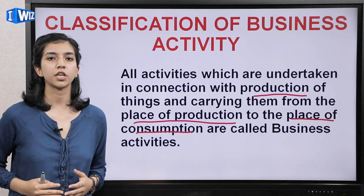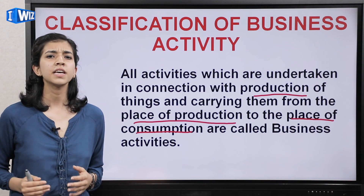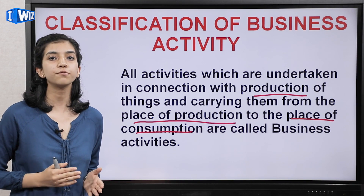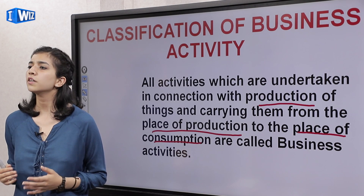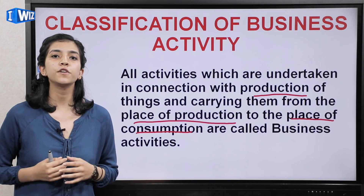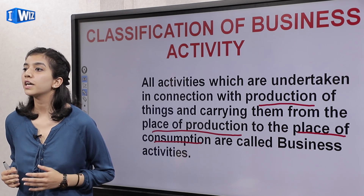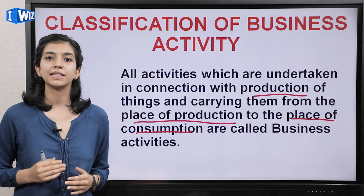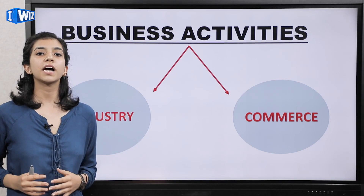The first key term is production. Production ka matlab hota hai kisi bhi raw input ko use karke ek consumable output produce karna. Then the question arises: what is a place of production and why are we supposed to carry goods from the place of production to the place of consumption? Har cheez har jaghe produce nahin ho sakti because the resources might not be available at every place. For example, Punjabi phulkari are mainly produced in major centers of Punjab but they are demanded worldwide. So here business activities come into play — they help goods move from the place of production to the place of consumption.